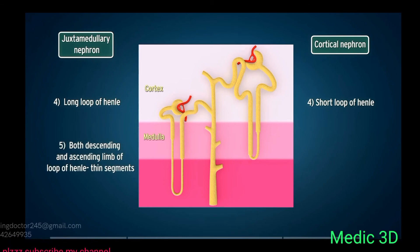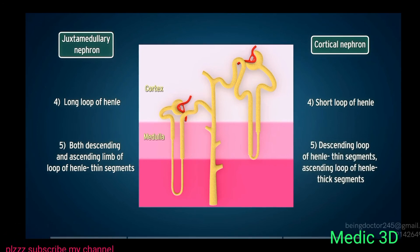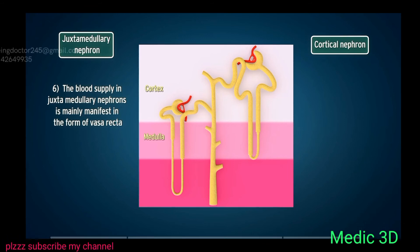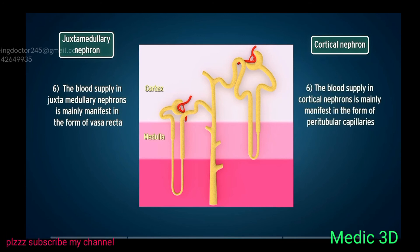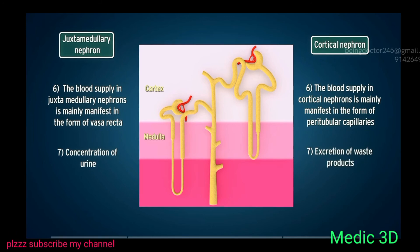In juxtamedullary nephrons, both the descending and ascending limbs of the loop of Henle contain thin segments. In cortical nephrons, the descending limb contains thin segments while the ascending limb contains thick segments. Blood supply in juxtamedullary nephrons is mainly via the vasa recta, while in cortical nephrons it is mainly via peritubular capillaries. Juxtamedullary nephrons play an important role in urine concentration, while the main function of cortical nephrons is excretion of waste products.